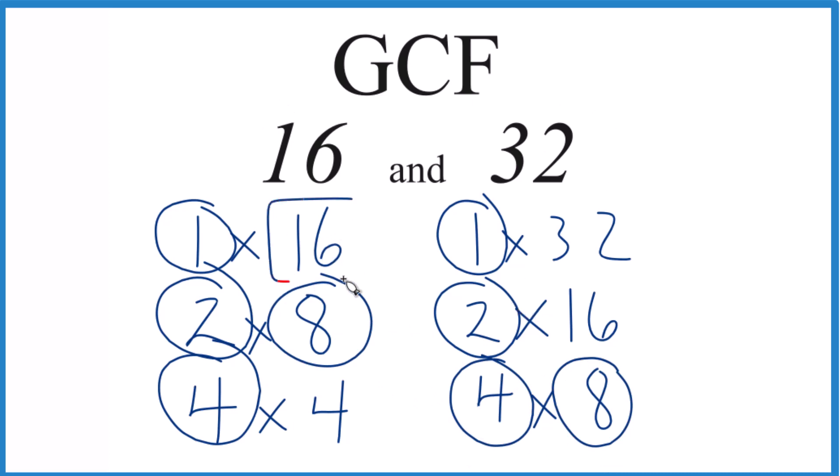But the greatest one, the greatest common factor, that is 16, goes into both 16 and 32 evenly. So, the answer to our question, the GCF for 16 and 32, is 16.